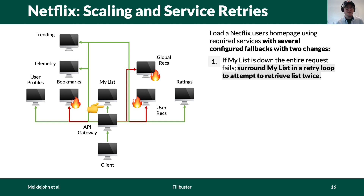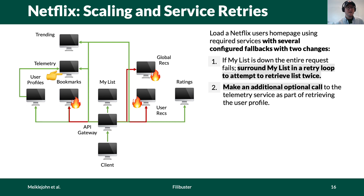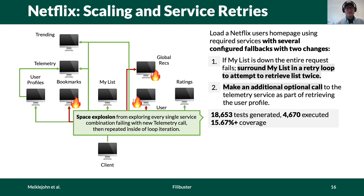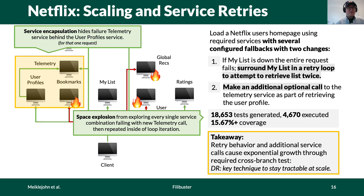If we modify our Netflix example with two changes — first, adding a retry loop around the MyList service, and second, making an optional call from the profile service to the telemetry service to log user statistics — we see quite a different execution. In this case, 18,000 tests are required, but we only have to execute around 4,000. We need to explore all combinations of ways telemetry can fail with all other services, and we're penalized by the retry loop because the system may behave differently the first versus second time a service is contacted. However, the encapsulation behind the user profile service for telemetry allows us to remove many executions, since the outcome of the telemetry call will be encoded in the user profile's response. This demonstrates how dynamic reduction is the key technique that keeps us tractable in the local development environment.